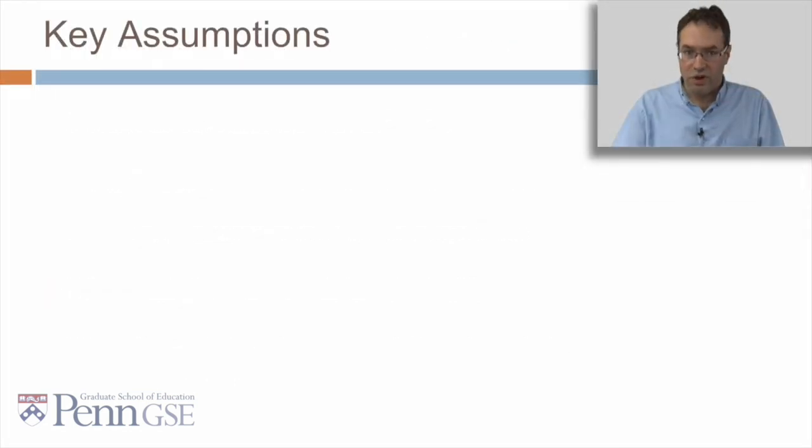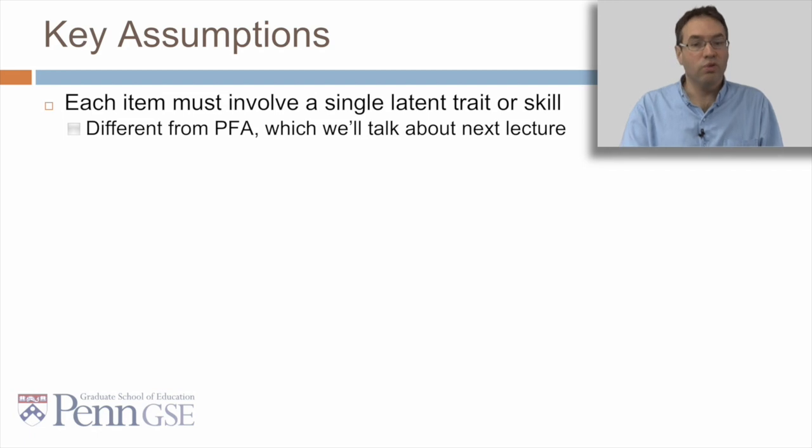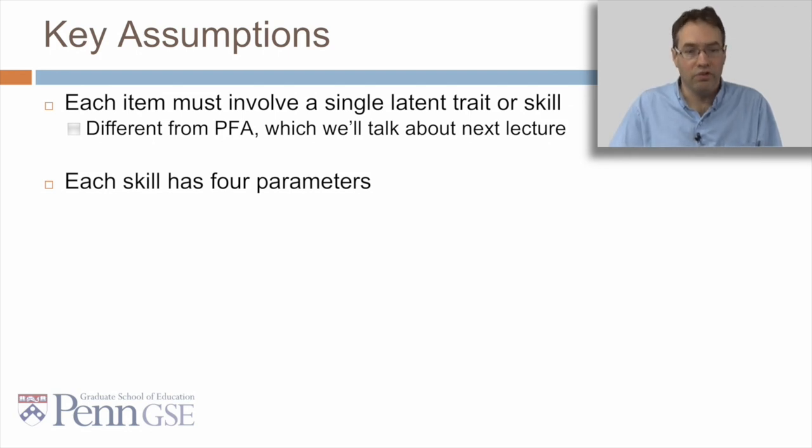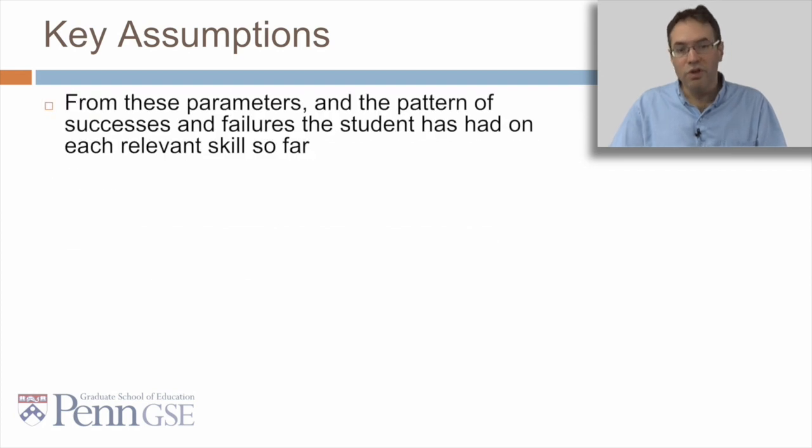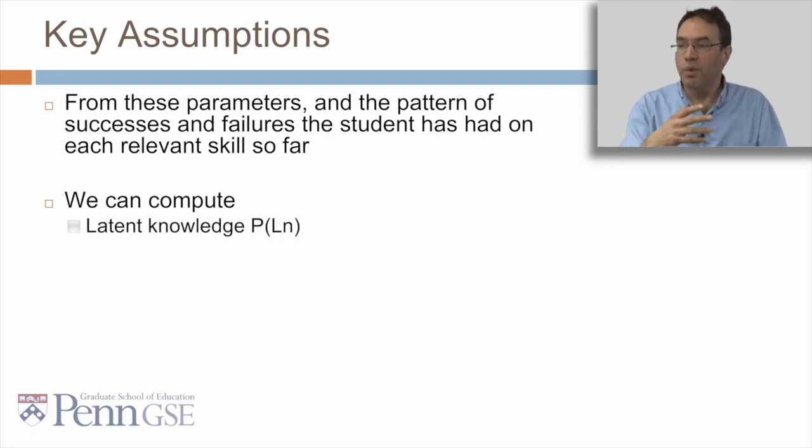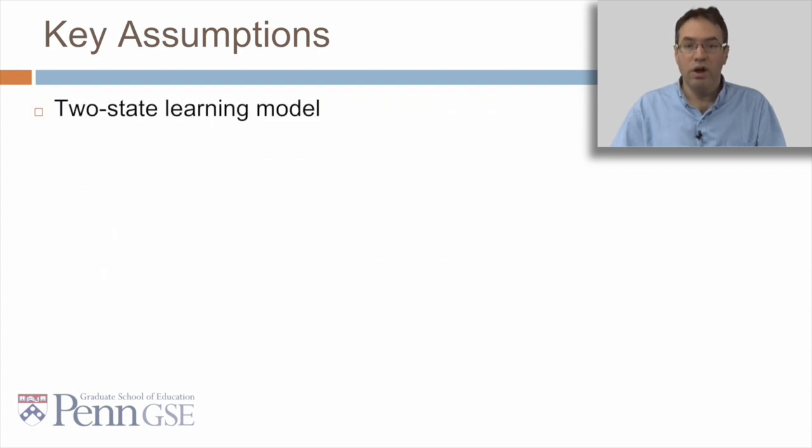So what are some of the key assumptions of Bayesian knowledge tracing? First, it assumes in its classical form that each item must involve just a single latent trait or skill. This is different from PFA, which we'll talk about in next lecture, and there's also extensions of BKT that get past this. Each skill has four parameters. We'll talk about those four parameters in a minute. Only the first attempt on each item matters, or in other words, it's included in the calculations.